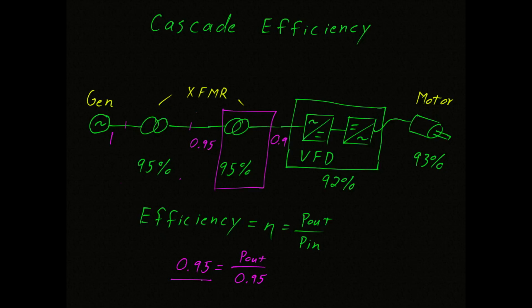Now we'll take this one step further and look at the input and output of the variable frequency drive. The variable frequency drive has an efficiency of 0.92. And the power going in is 0.9. We can see that the output power is the product of these two, which is equal to 0.83.